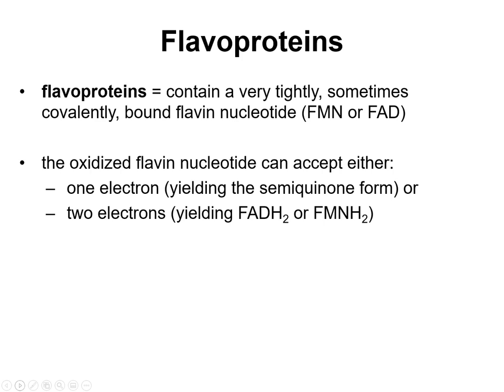Flavoproteins do a lot of redox chemistry. They're unique in that they contain a very tightly and sometimes covalently bound flavonucleotide, and the characteristics of that nucleotide are very much influenced by the surrounding residues. So unlike NAD or NADP where characteristics are fairly stable, the protein actually influences the characteristics of the flavonucleotide. The good thing about flavonucleotides is that they can do one or two electron chemistry, making them more versatile.